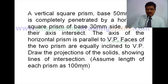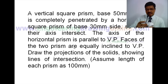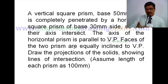Assume the length of each prism is 100 mm. In this problem, the horizontal square prism is completely penetrated into the vertical square prism. When penetrated, this surface and that surface will intersect, and as a result we will get one line of intersection. Similarly, on the other sides, when surfaces intersect we will get additional lines of intersection.